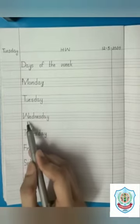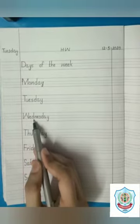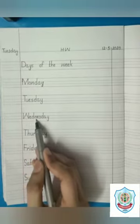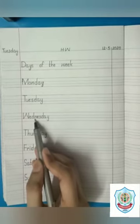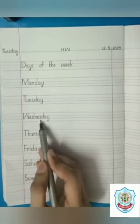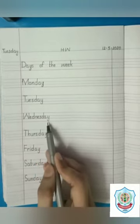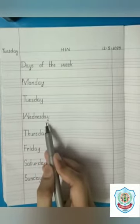Tuesday. The next one is Wednesday. Wednesday — W has a sound W. E has a sound A. D has a sound D, but it is silent here. N has a sound N. E has a sound A. S has a sound Z. D has a sound D. Y makes a sound A. Wednesday.